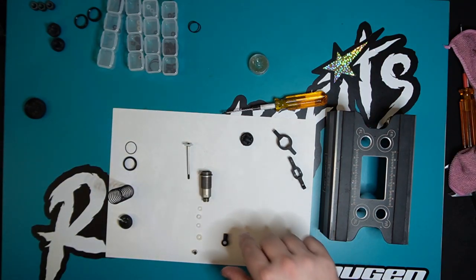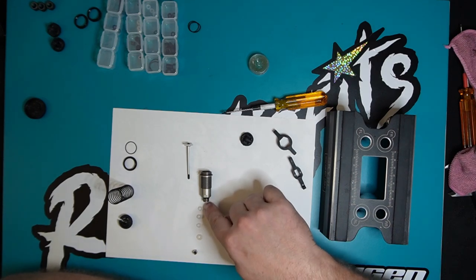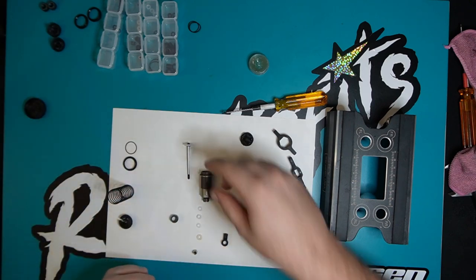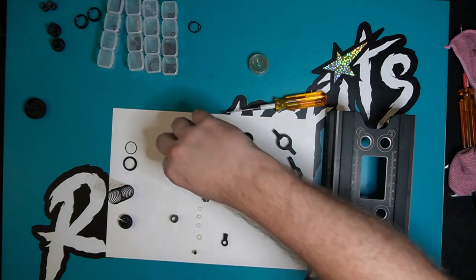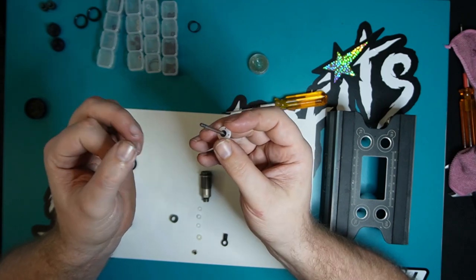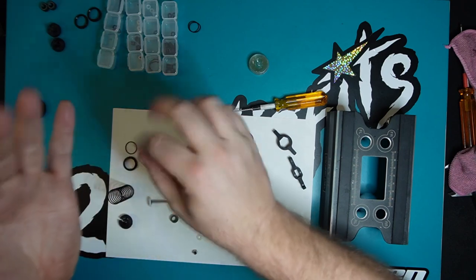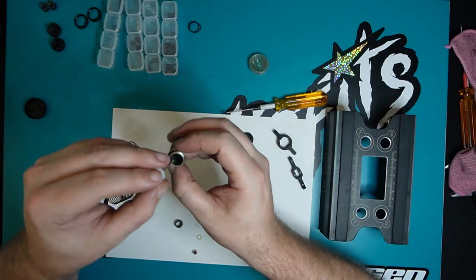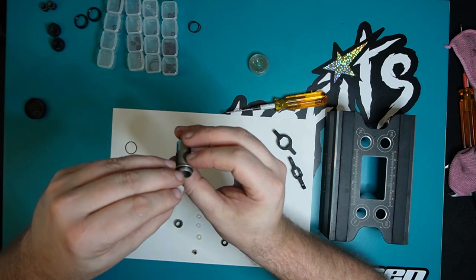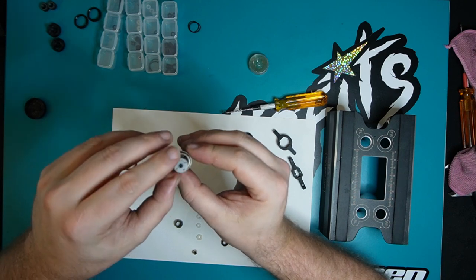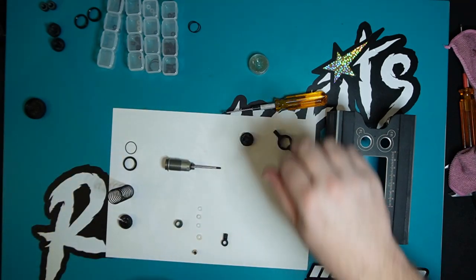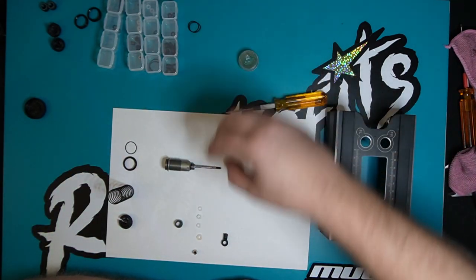Now there's two ways you can do this next section. Some people put all these into the bottom of the shock and put the end cap on loosely so the o-rings aren't compressed, and then gently slide the shock shaft through - gently because obviously there's a threaded section on the end that you don't want to damage the o-rings with. The way that I tend to do it is I should drop this in first.